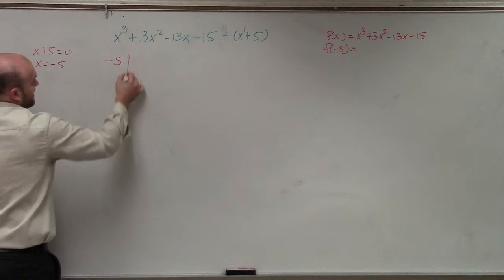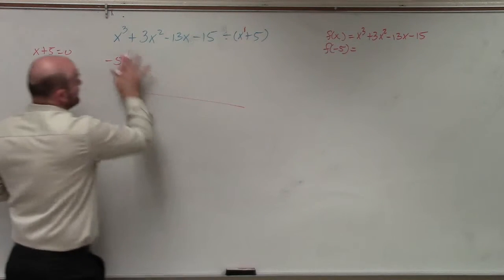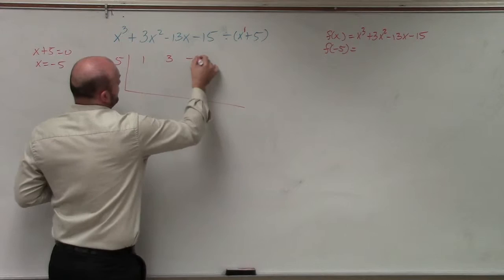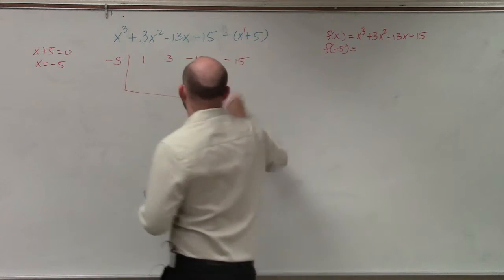So if I have negative 5, then I take the coefficients 1, 3, negative 13, negative 15.